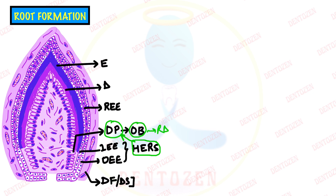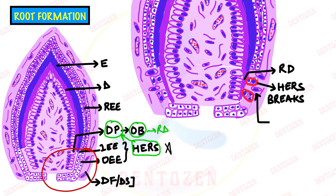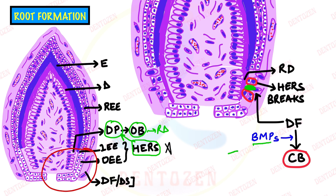But where are the cementoblast cells? Once root dentine is formed — shown here in pink — beneath the odontoblast cells, HERS will break. Through the spaces created in HERS, cells of the dental follicle go inside and contact the newly formed dentine. Once they contact the dentine, these cells receive a signal and differentiate into cementoblast cells, with the help of bone morphogenic proteins (BMPs), which belong to the transforming growth factor family.